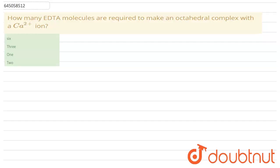Hello everyone, in this question we have to find out how many EDTA molecules are required to make an octahedral complex with a Ca2+ ion.